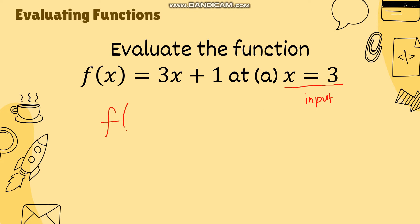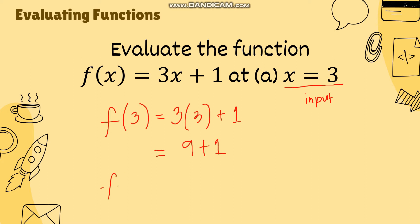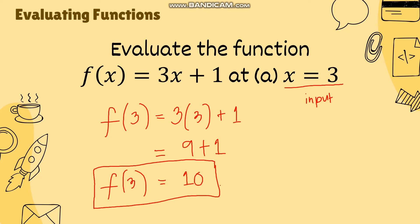All we have to do is substitute. So this will become f(3), meaning we are substituting 3 for the variable of the given function. So we have 3 times 3, then plus 1. Simplifying, we have 9 plus 1, or f(3) is equal to 10. Given that the value of x is 3, the corresponding output of the function is equal to 10.